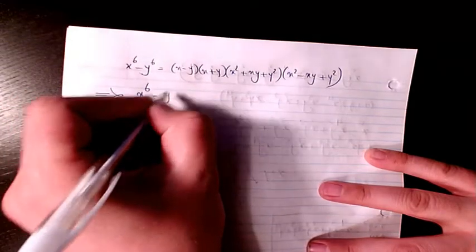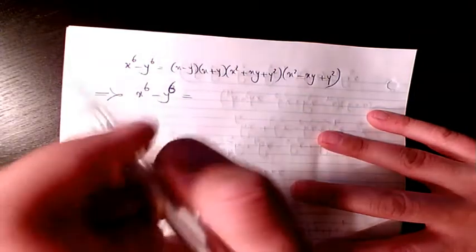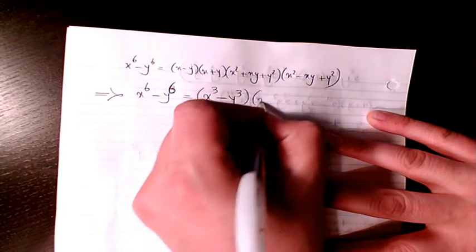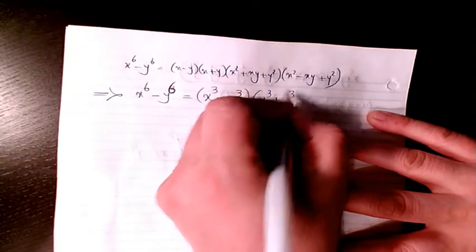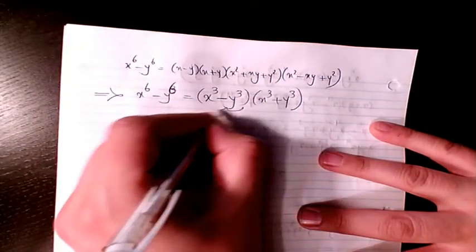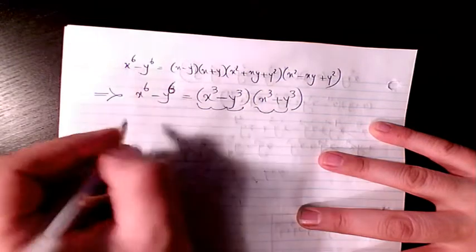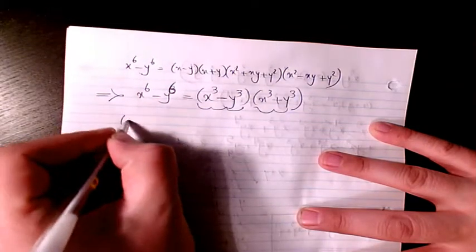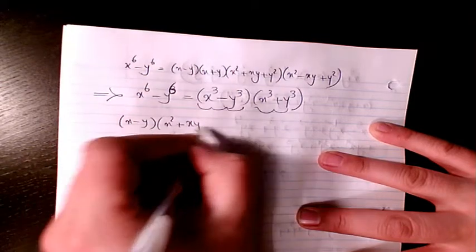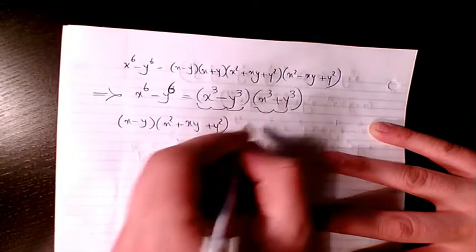I can write x to the power of 6 minus y to the power of 6 using the difference of squares as x cubed minus y cubed, times x cubed plus y cubed. We already had some videos regarding this — so x cubed minus y cubed becomes x minus y, times x squared plus xy plus y squared.